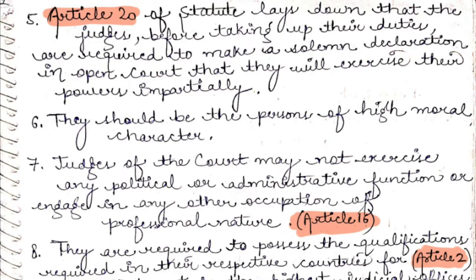The solemn declaration means judges must declare in open court that they will exercise their powers impartially — they will not be biased and will provide fair justice. Point 6: persons elected as judges are required to be of high moral character.